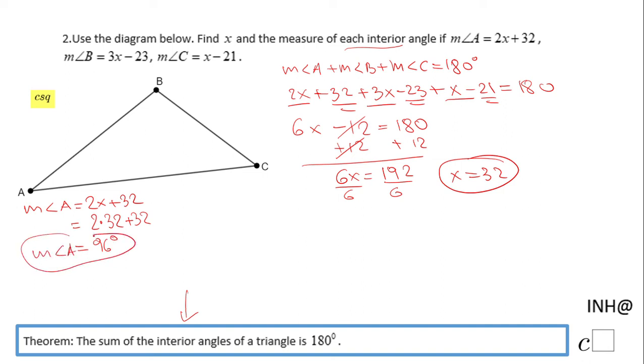This angle is 96°. Looking at our picture, you notice in the picture angle A is an acute angle. However, this one is an obtuse angle, it's more than 90° - it's 96°, so the picture is not accurate.